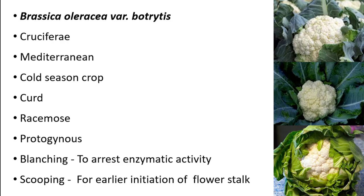The edible part of cauliflower is the curd, and the inflorescence is racemose, where the main axis is branched and each branch carries flowers. Cauliflower is protogynous in nature, where the female part of the flower matures first.